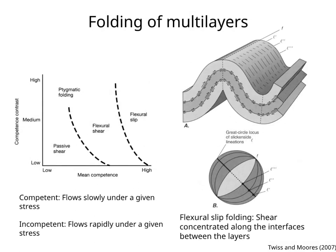So far we have discussed a rock layer of homogeneous properties. However, rock sequences are formed of multi-layers. Some layers will flow slowly under a given stress and they will be competent, while other layers will deform rapidly under the same stress and they will be incompetent.